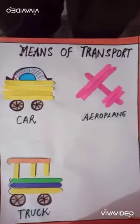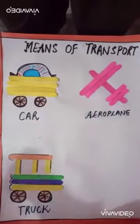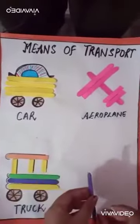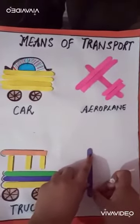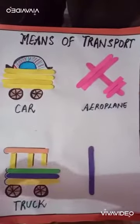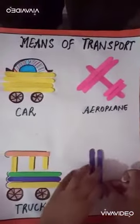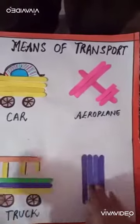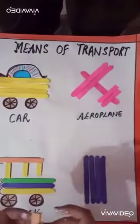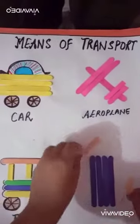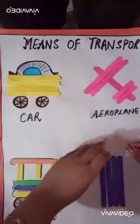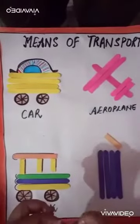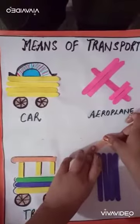Dear students, we will make a rocket with the help of ice cream sticks. Take an ice cream stick and paste it over the sheet like this. Take another one. Now we will make a rocket with the help of ice cream sticks and cut it into two parts like this, and paste it over here.